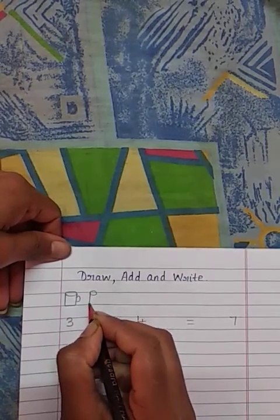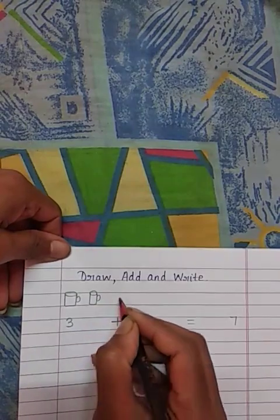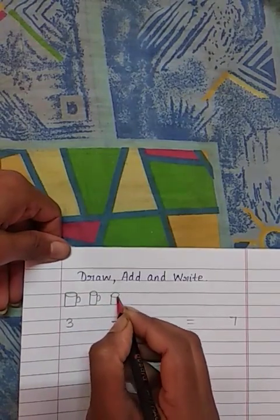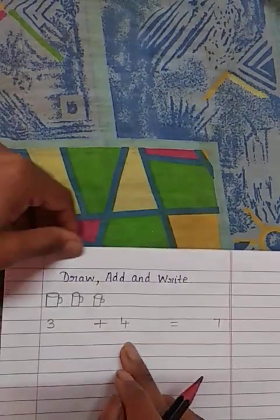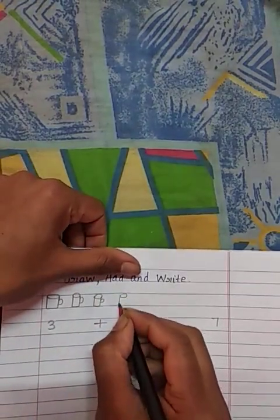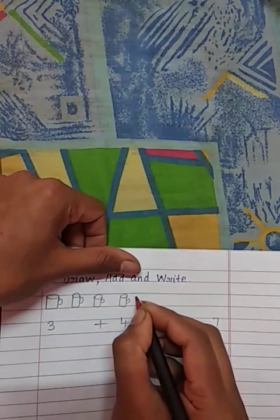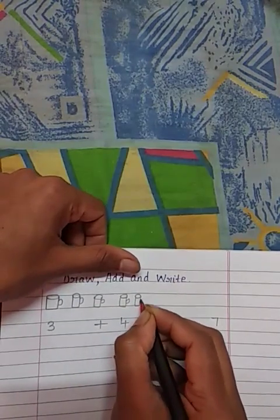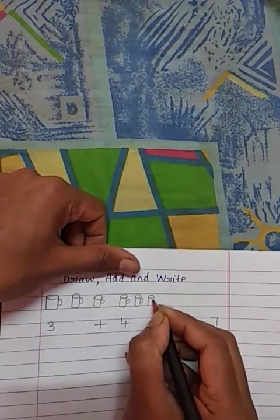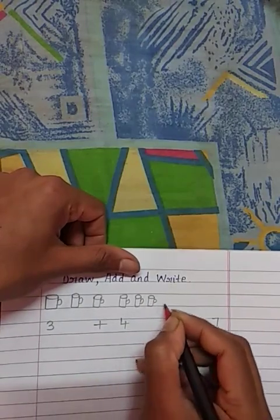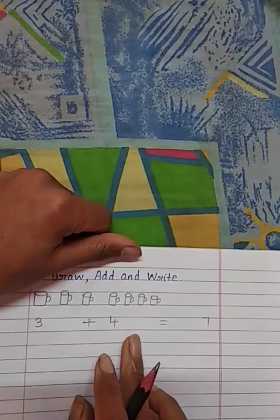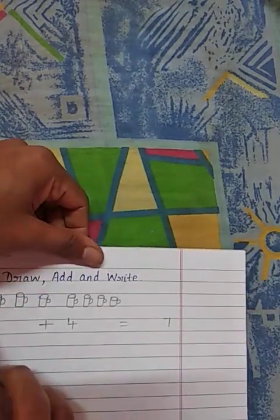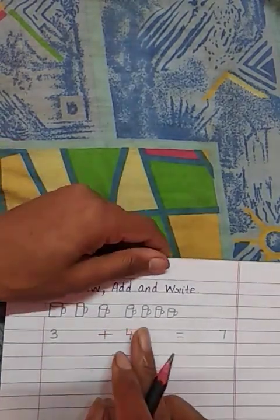After finishing, as they have stated here 4, draw here 4 mugs. See, 1, 2, 3, 4, right? Now we will see here total is 1, 2, 3, 4, 5, 6, 7.